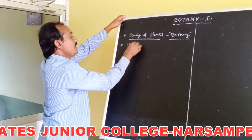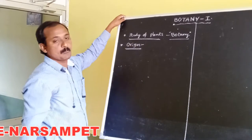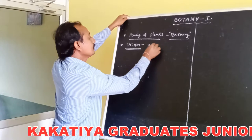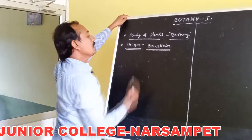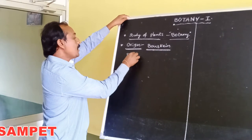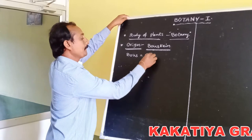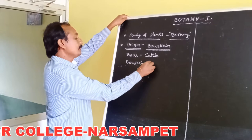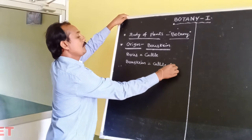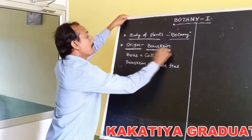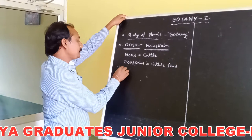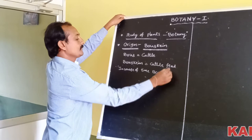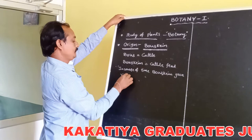First, we are discussing the origin of Botany. Botany is derived from a Greek word 'Bouskin.' In the Greek language, 'Bous' refers to cattle, and 'Bouskin' refers to cattle feed. In course of time, Bouskin gave rise to the word Botany.